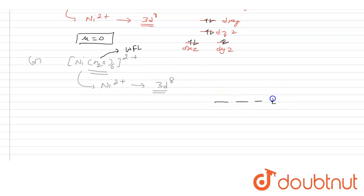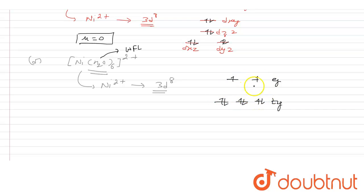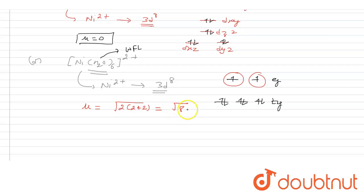Filling 8 electrons into the octahedral diagram (T2g and Eg levels): 1, 2, 3, 4, 5, 6, 7, 8. As you can see, there are 2 unpaired electrons in the Eg orbital. So the spin-only magnetic moment μ = √(2×(2+2)) = √8. This complex therefore has a non-zero magnetic moment.